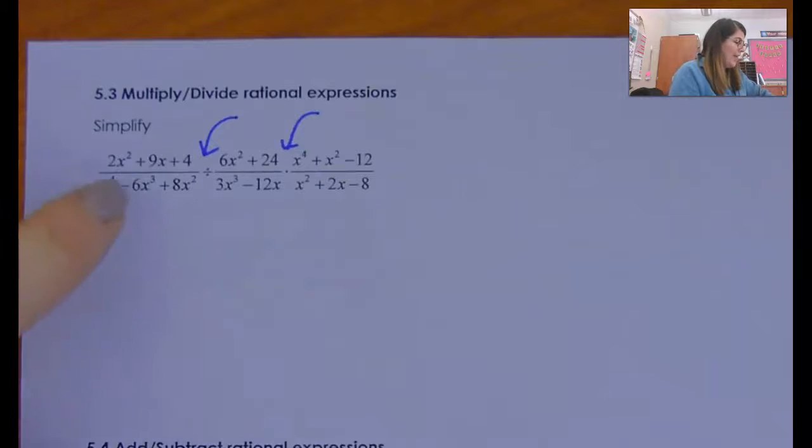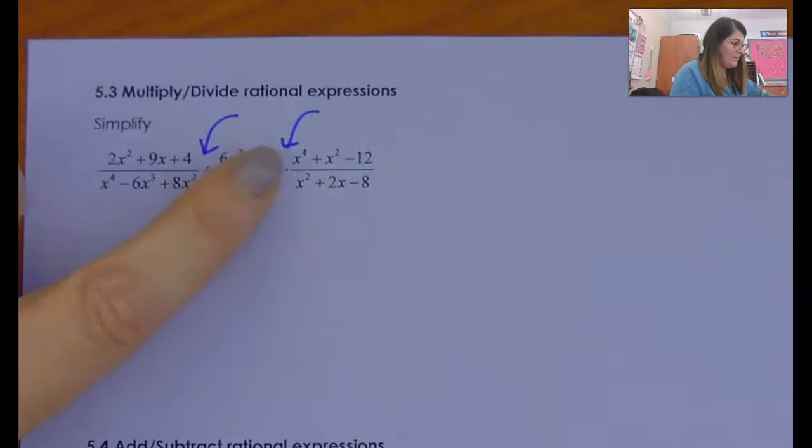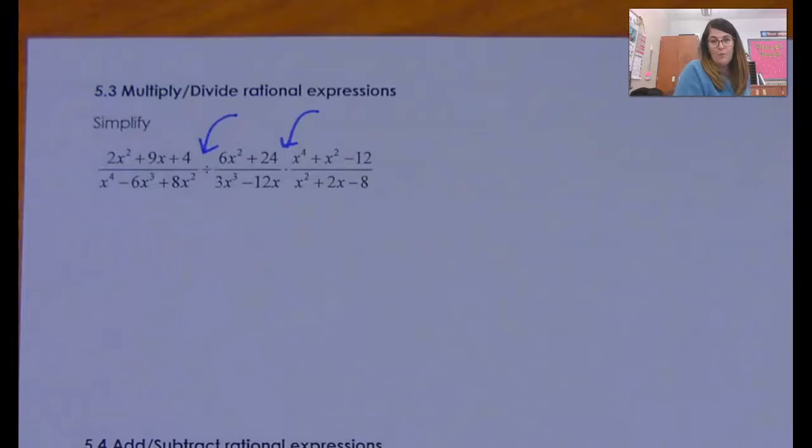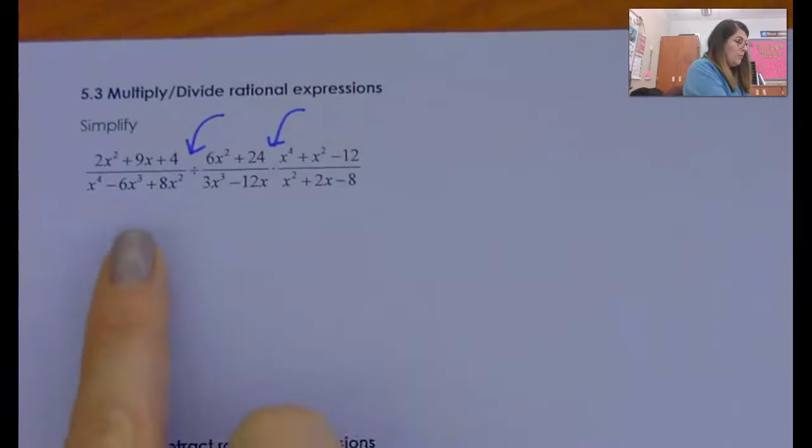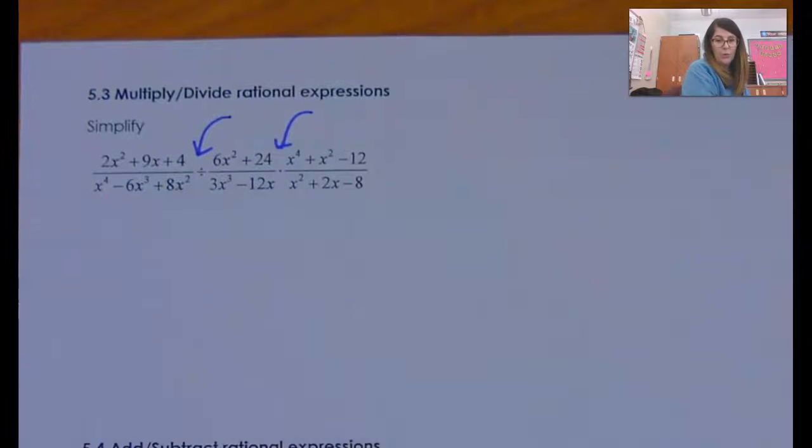So first thing I want to look at is the order of operations, division and multiplication. If one was addition, you'd have to pay a lot of attention to what you did first, but it's not. So multiplication and division, you just go in order from left to right.